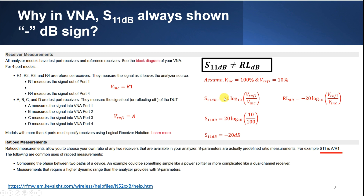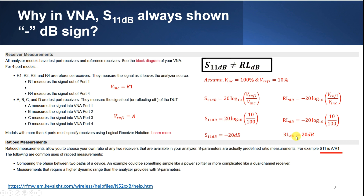For return loss, there is a negative sign in front of the formula, unlike S11 which has no negative sign. Because return loss contains the word 'loss,' the 20 dB result is understood to be a loss, so everyone knows it is a positive value and we don't need to add a negative sign. Therefore S11 in dB is not equal to return loss in dB - they differ only by sign.